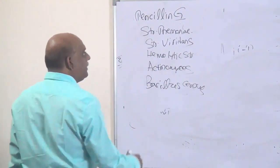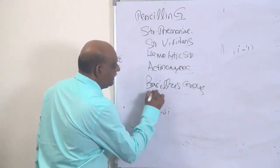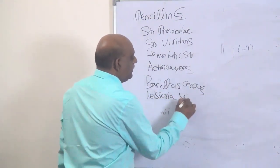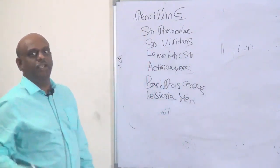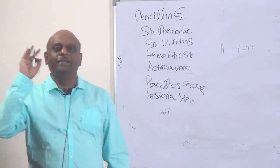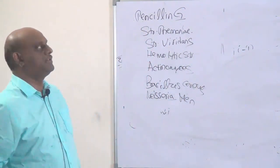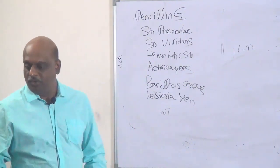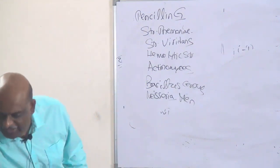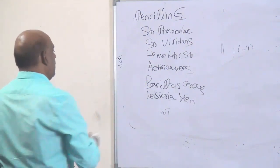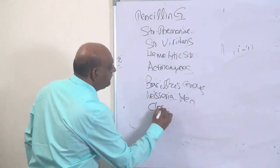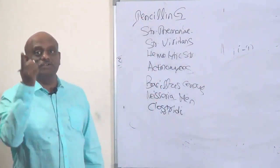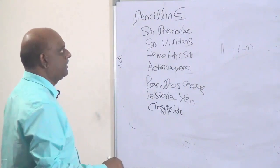Neisseria meningitidis — penicillin G is the drug of choice. Then clostridium — another organism. Please don't forget: penicillin G is the drug of choice for clostridium as well.